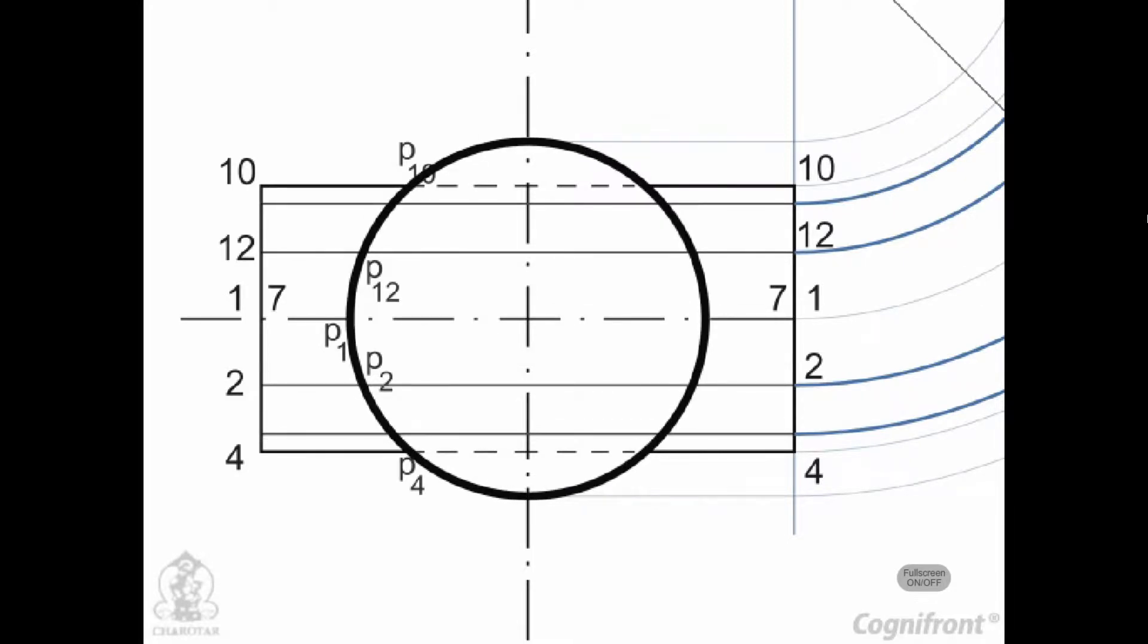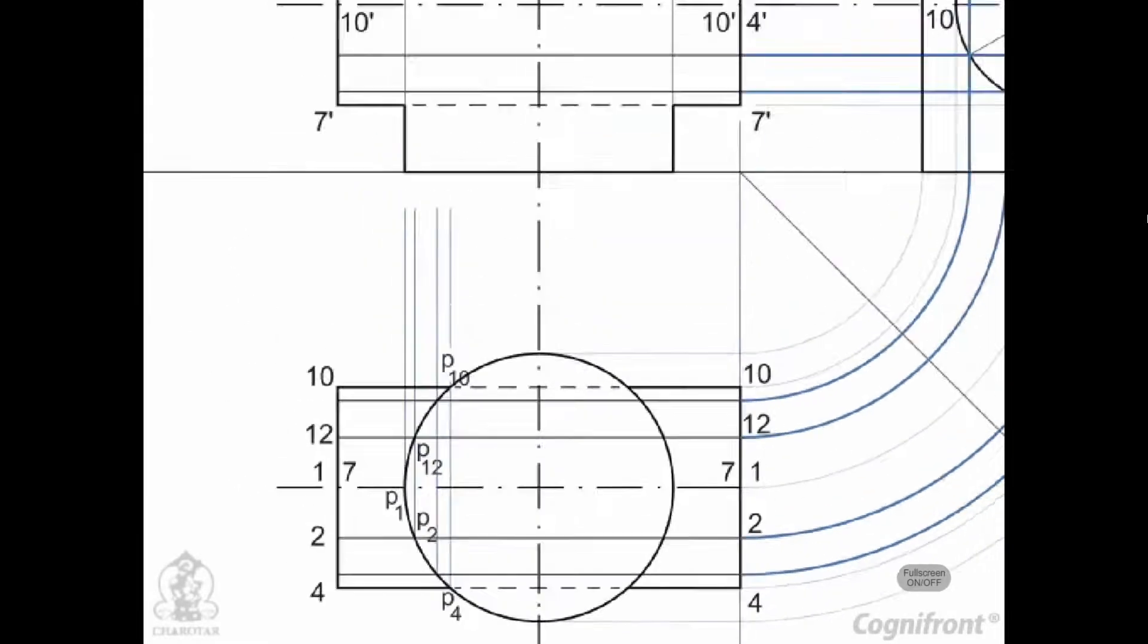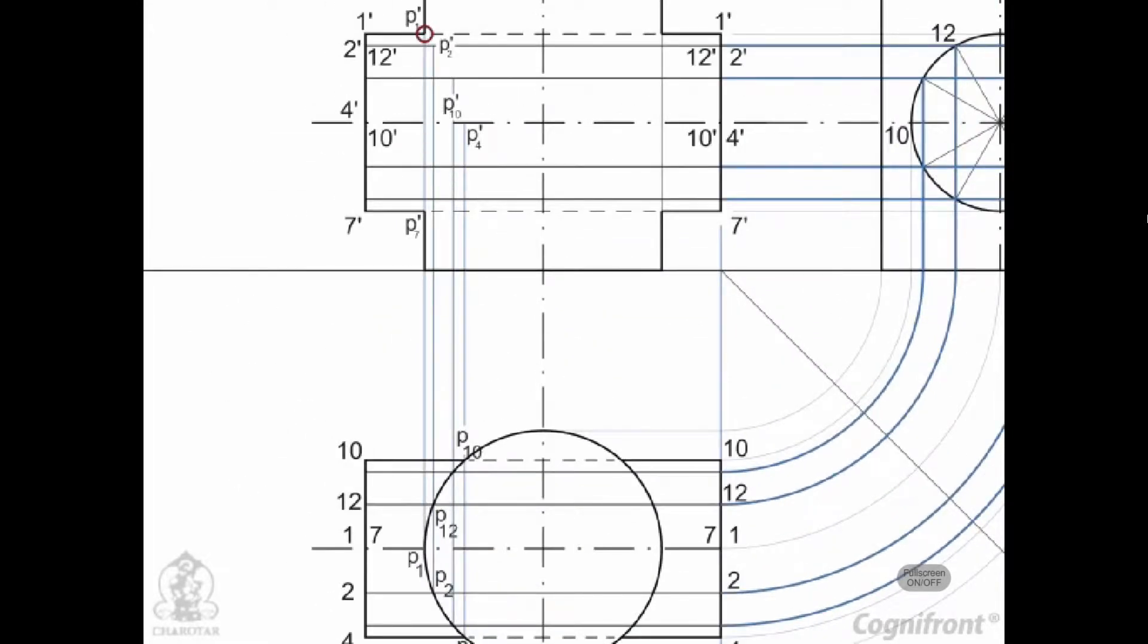Project them to P-1, P-2, etc. on corresponding lines 1-1, 2-2, etc. in the front view.